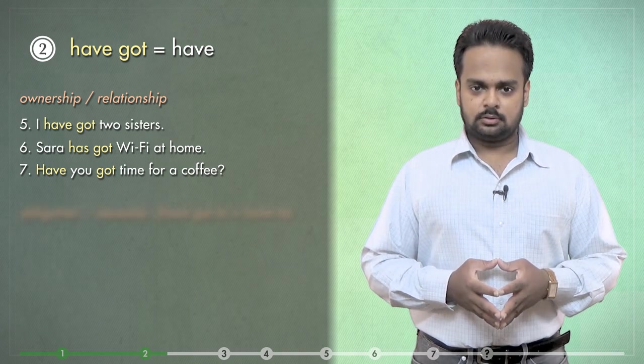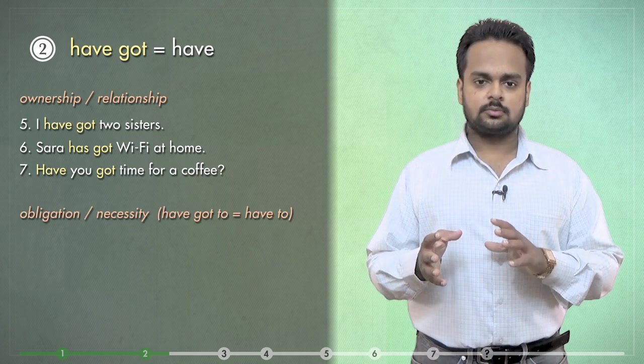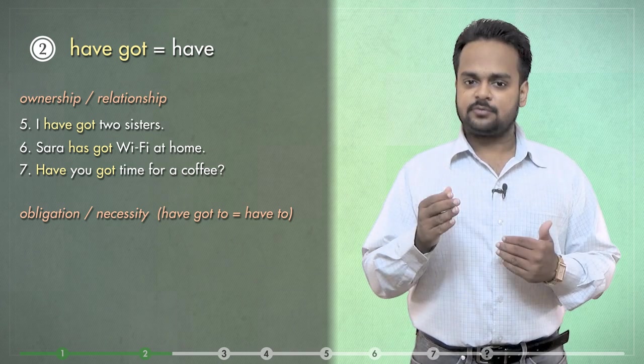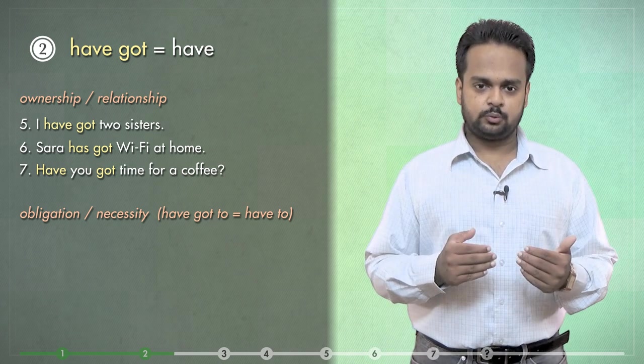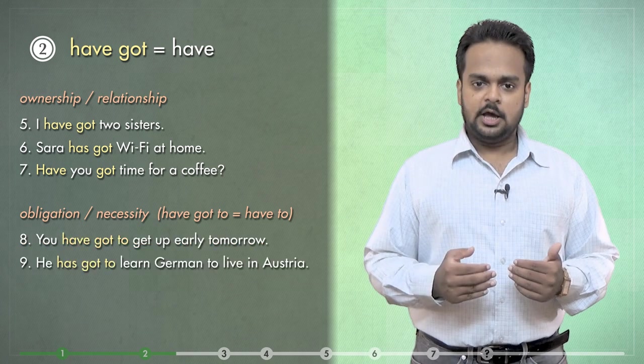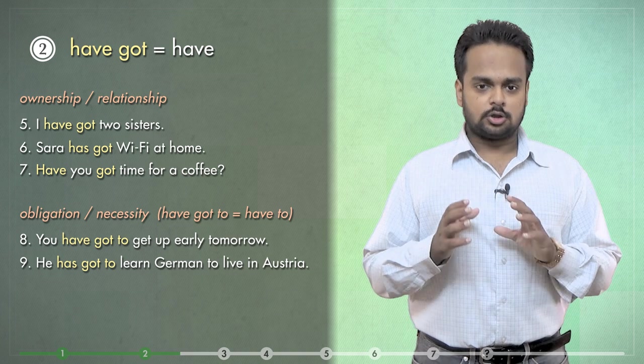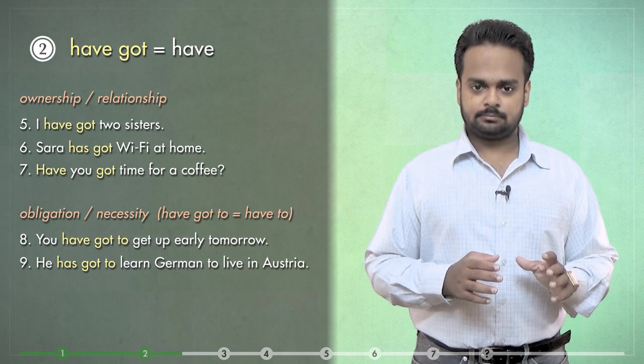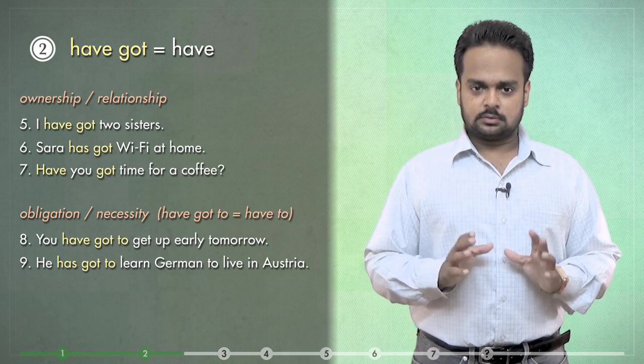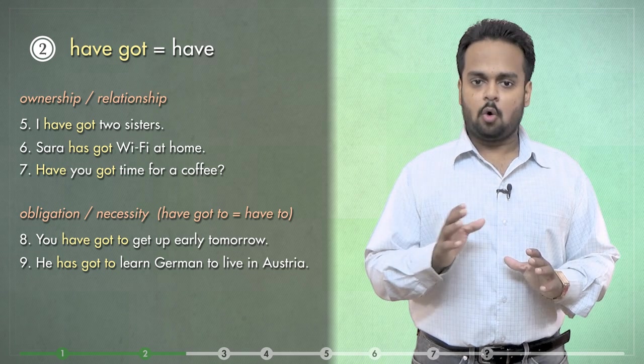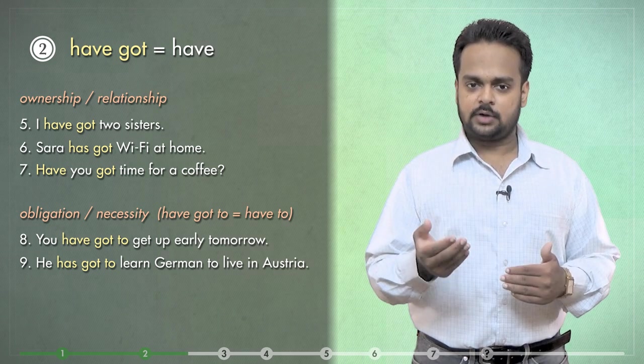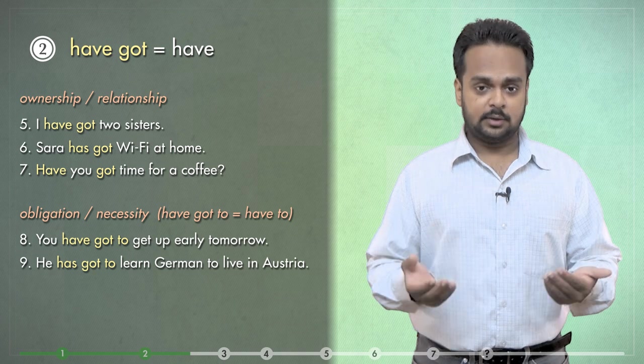The second function is to express obligation or necessity. That is, by using have got to in the place of have to. Like in these examples, you've got to get up early tomorrow. Or, he has got to learn German to live in Austria. In all of these sentences, you can use have or has instead of have got or has got and the meaning would be the same.